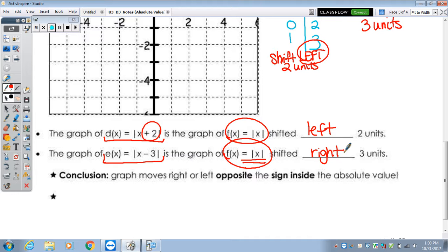Conclusion, the graph moves right or left, which is opposite the sign inside the absolute value. In function notation, we would see f of x plus or minus b. It would be inside of that function notation. If it's a plus b, we're going to move left b units. And if it's a negative b, we move right.